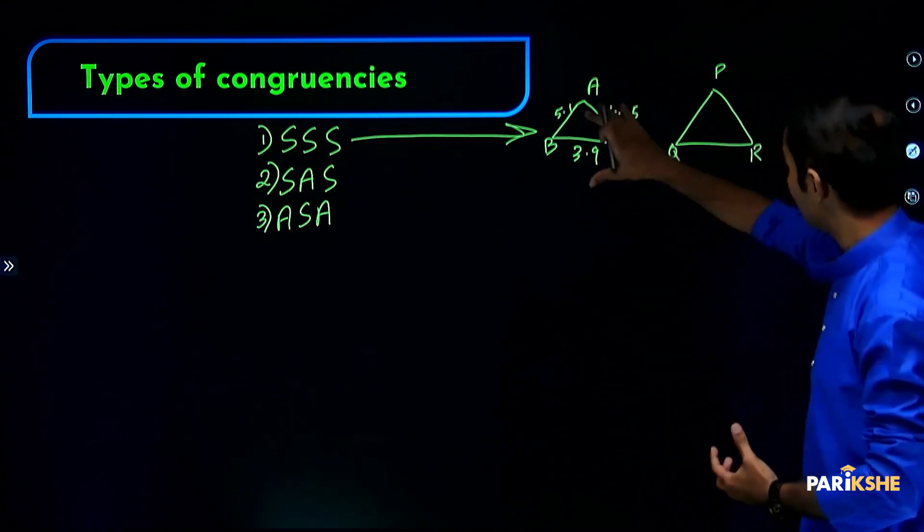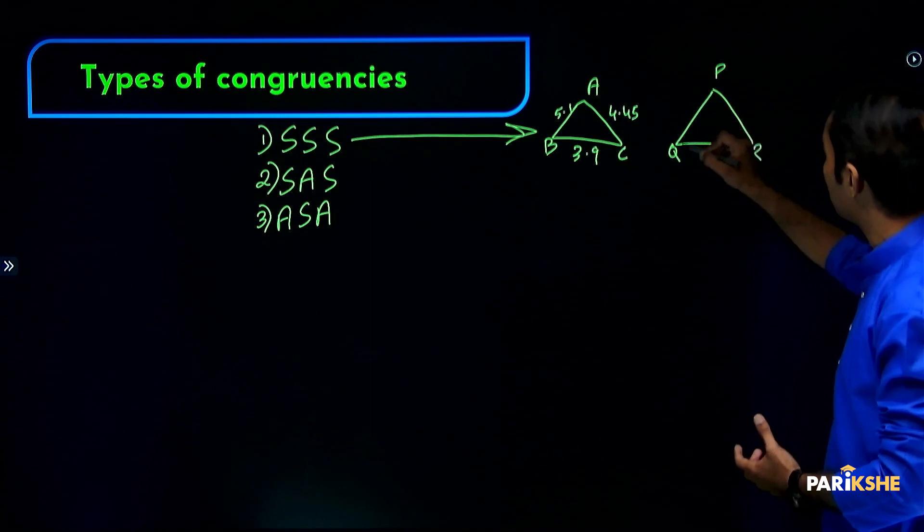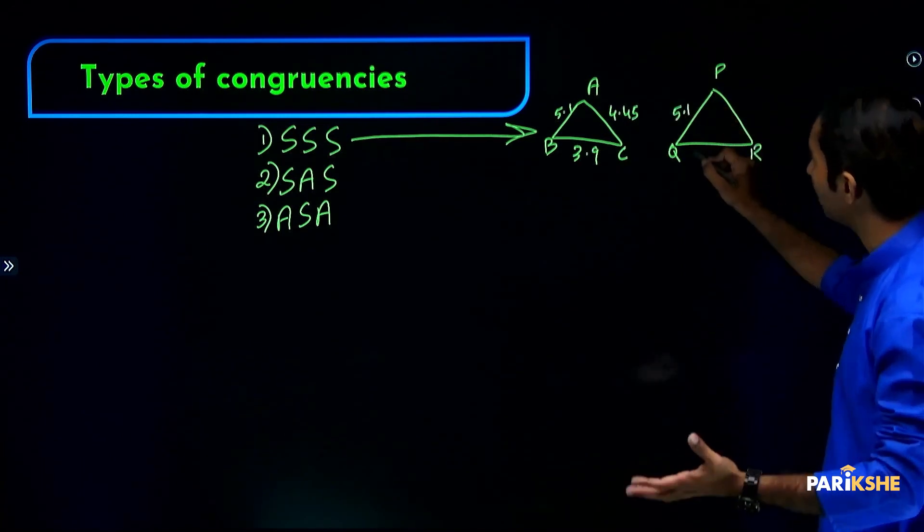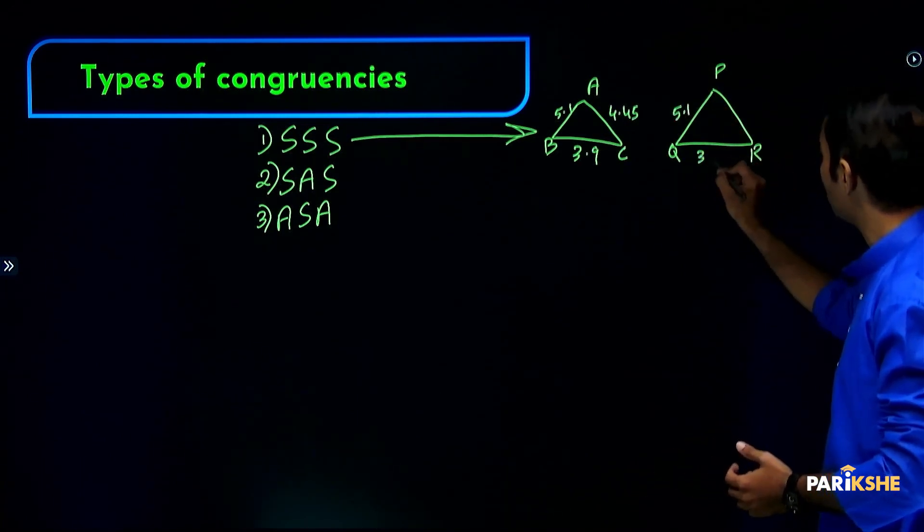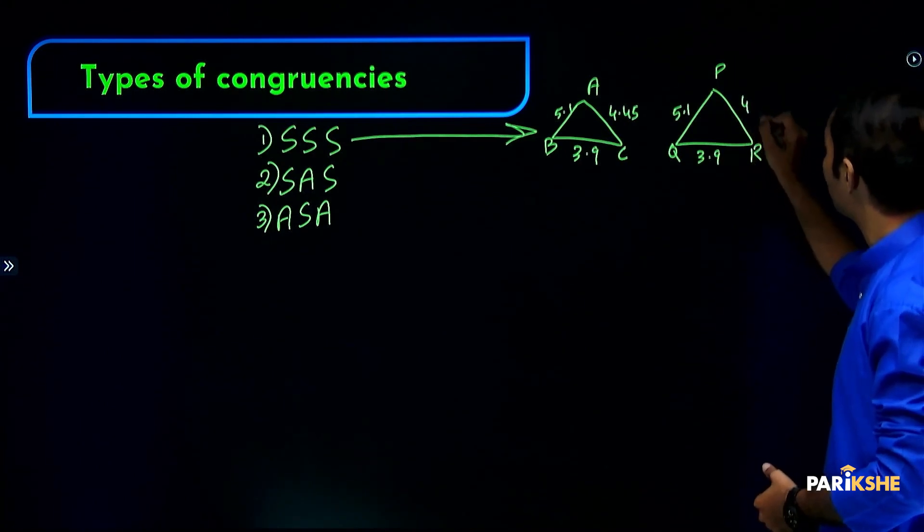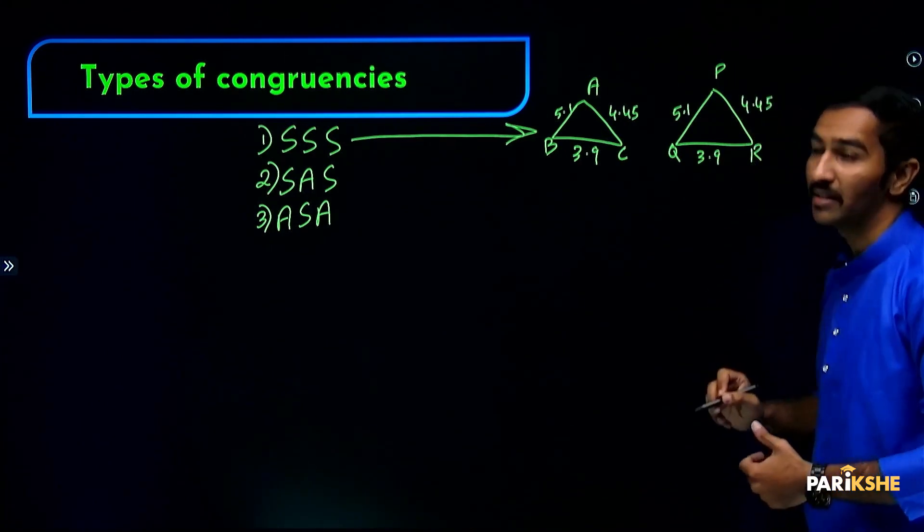AB side is 5.1, BC side is 3.9, AC side is 4.45. These measurements are 5.1 cm, 3.9 cm, 4.45 cm, alright.